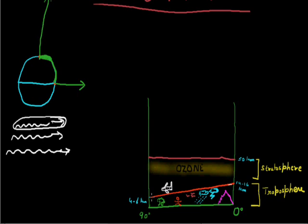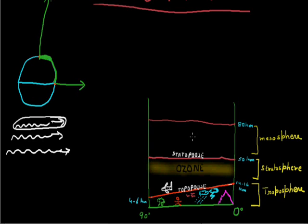The upper limit of the Troposphere is called the Tropopause. Similarly, the upper limit of the Stratosphere is called the Stratopause, and the upper limit of the Mesosphere is called the Mesopause. The name of the upper limit of each sphere is based on that particular sphere. The next sphere is the Mesosphere, and its upper limit is 80 km. The Mesosphere is the middle sphere, and we find a lot of dust particles and small particles in this sphere.